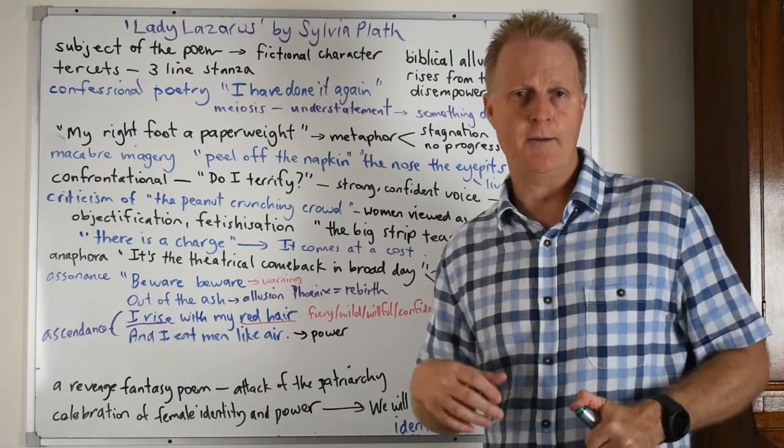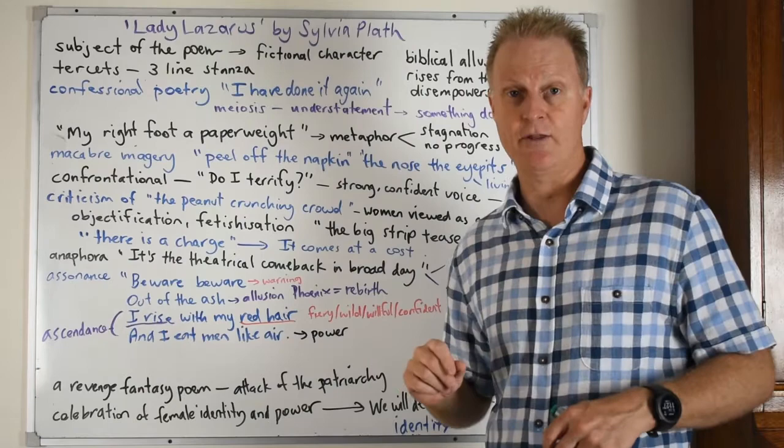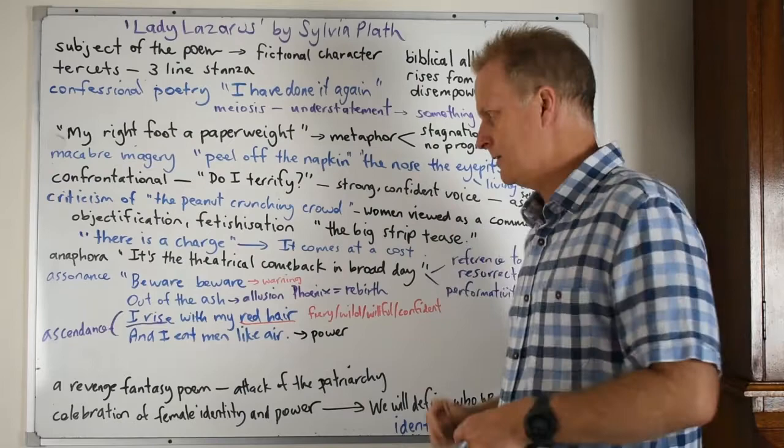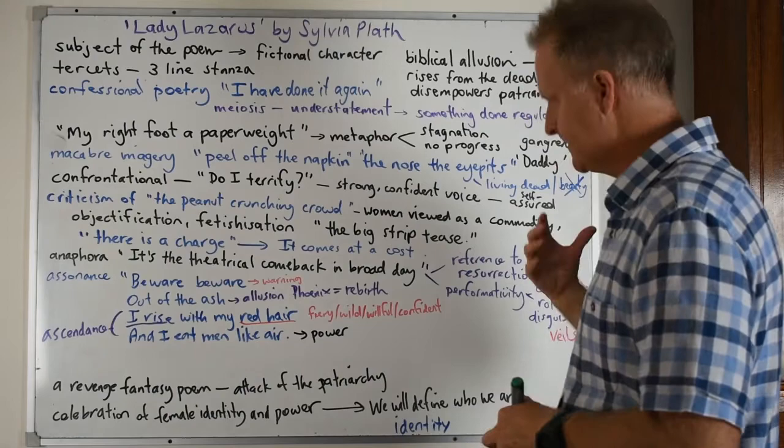And this is a common idea in Plath's poems as well. And there's a lot of references in other poems to veils and the veiled lady and having that veil or the disguise across the front that hides the true self. And this is an interesting idea that is very worthwhile exploring and building an argument around.